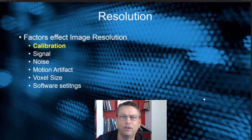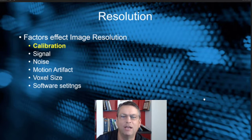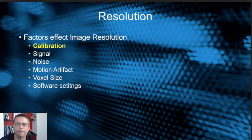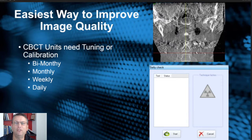There are lots of options that can help improve your image quality and resolution. We're going to focus on calibration, signal noise, motion artifact, voxel size, and software settings. Today we're going to talk about calibration. I think calibration is one of the easiest ways you can improve the image quality of your CT scans.